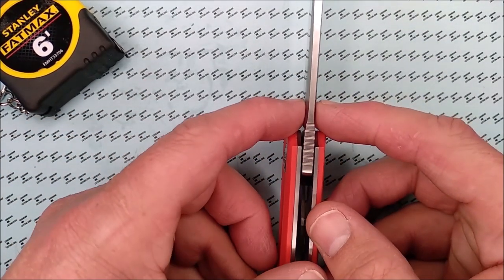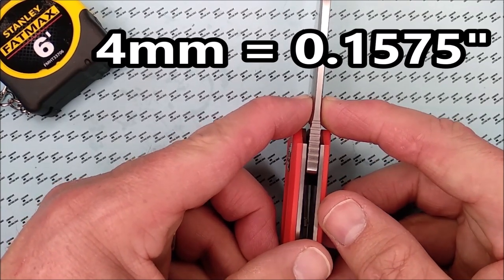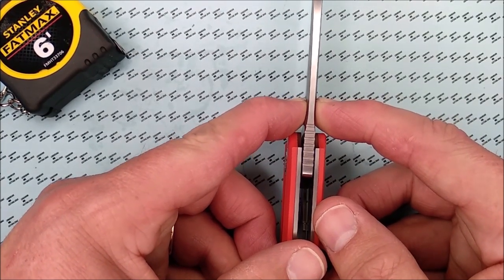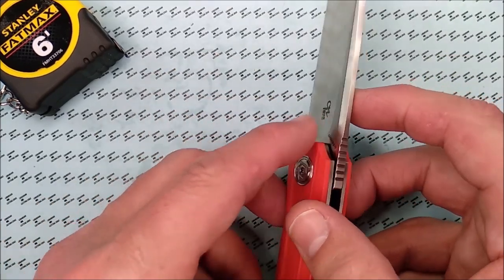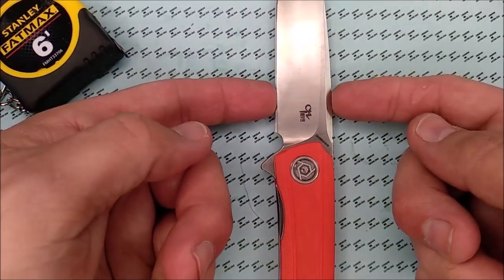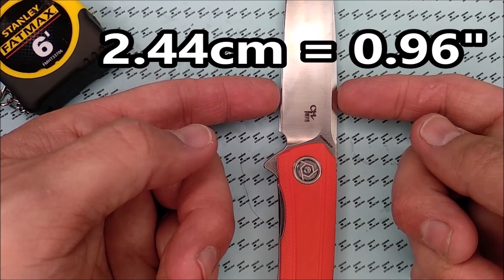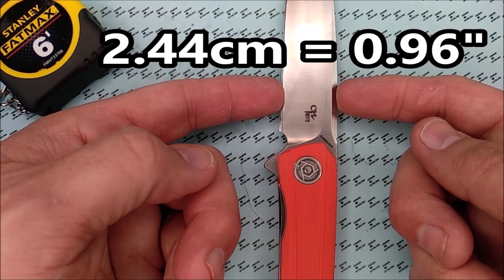The thickness of the blade is 4 millimeters. That's .1575 inches. So, I said it was a little thick, yet nicely thick here. The blade depth, that's this dimension here, 2.44 centimeters, .96 of an inch.